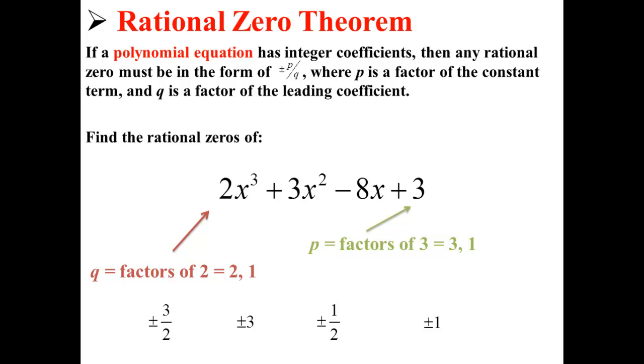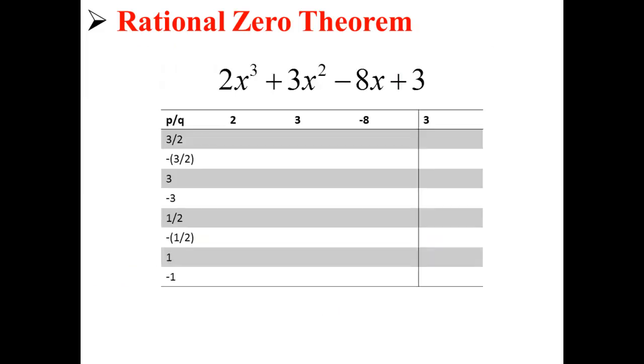This gives us plus or minus 3 over 2, plus or minus 3, plus or minus 1 over 2, and plus or minus 1. So we actually have 8 possible answers here, which we organize into this table.